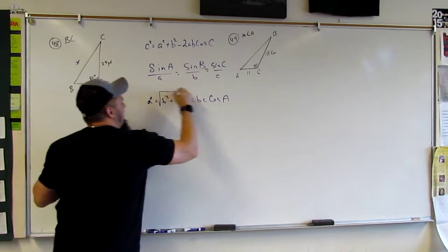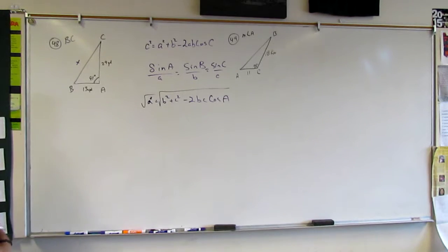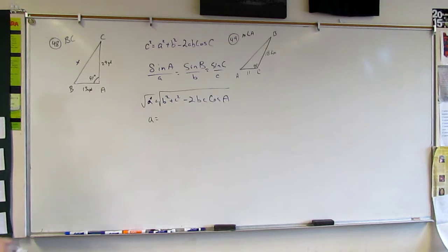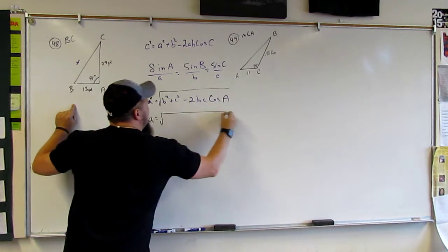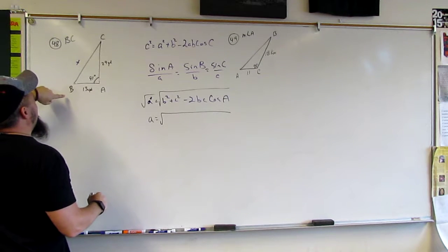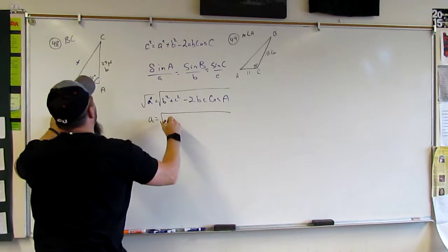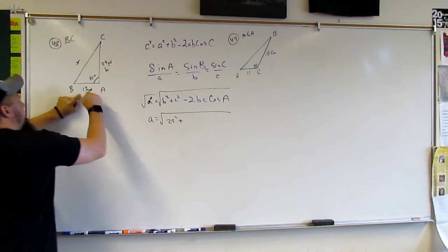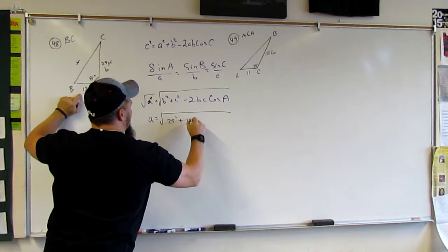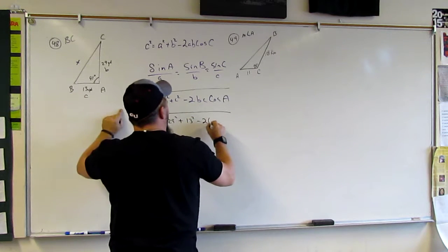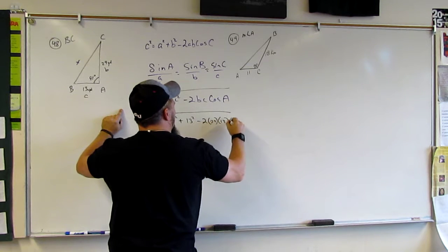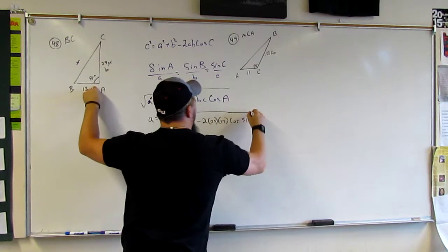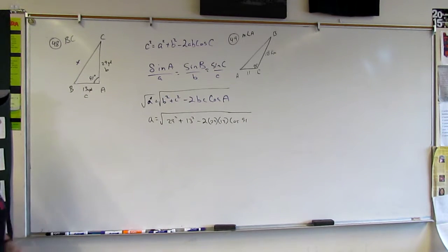And now I can plug in, well, then I can say that this is really the square root, right? So, I can say that A is equal to the square root of B. Little B is this guy, right? So, 29 squared plus little C, which is this guy, and so that's 13 squared minus 2 times 29 and 13 cosine of A is 91 degrees.